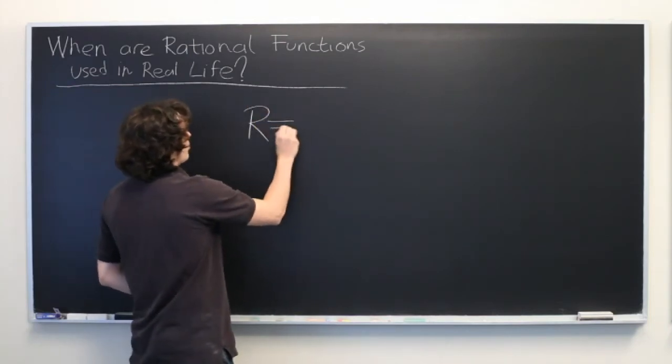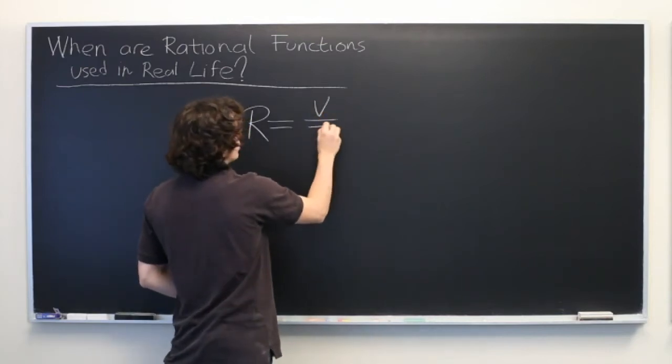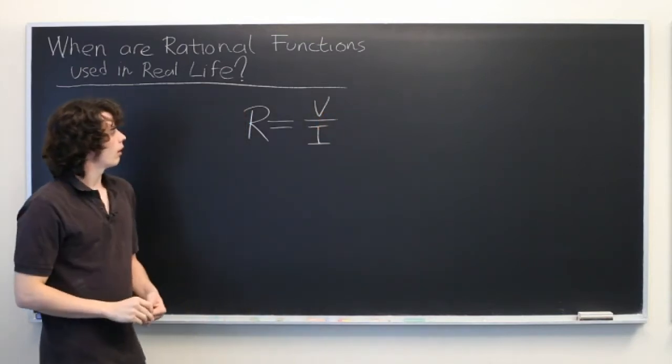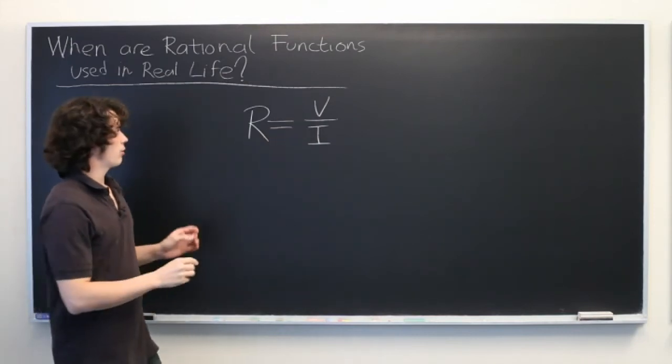There's a universal law that resistance is equal to voltage over current in a system. But let's say that voltage and current are both varying with respect to time.